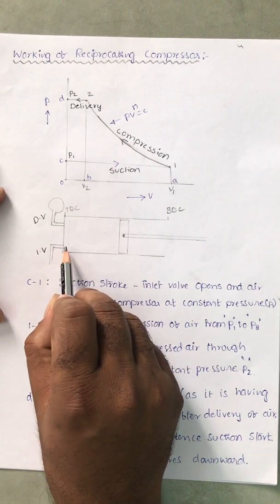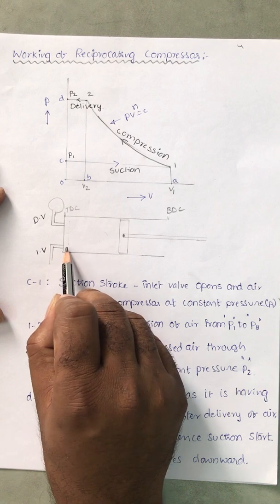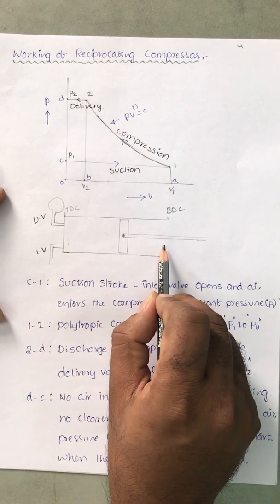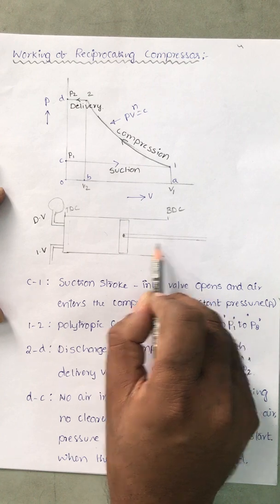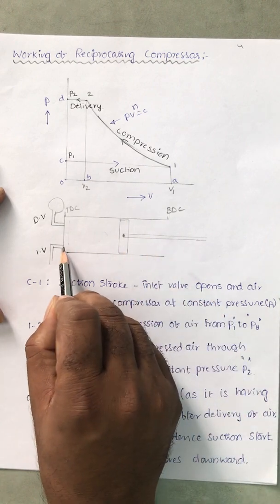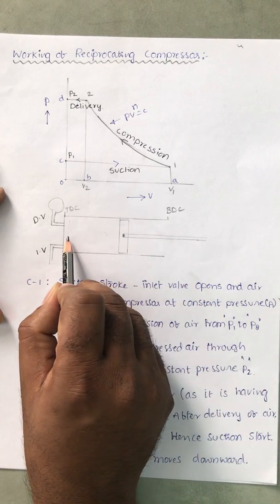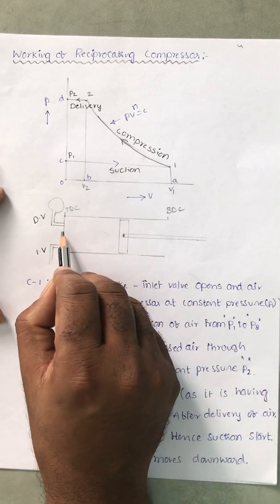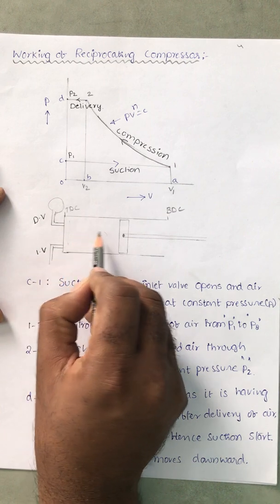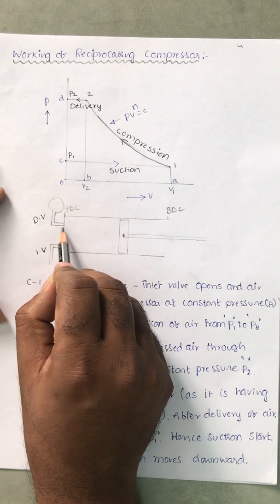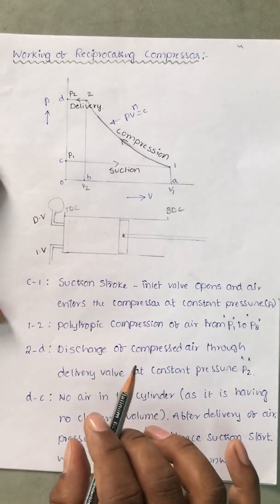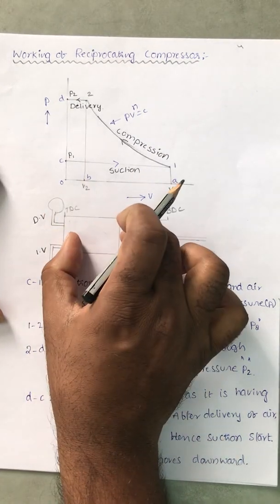The next cycle is then repeated. The inlet valve remains open until the piston reaches the bottom dead center — that is the suction stroke. When the piston starts to move upward from the bottom dead center, the inlet valve closes and compression takes place until the piston reaches the top dead center. The delivery valve remains closed until it reaches the top dead center, then the delivery valve opens and this air under high pressure is sent to the container. This is the cycle of operation.